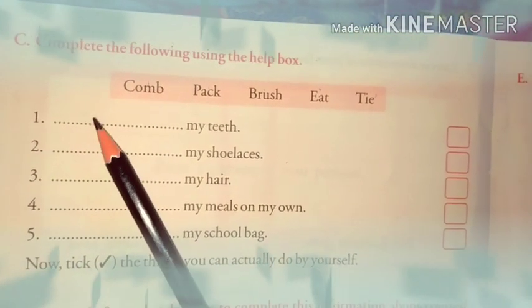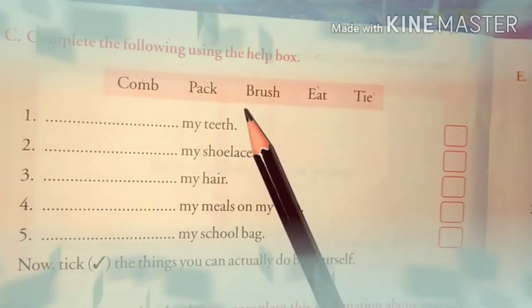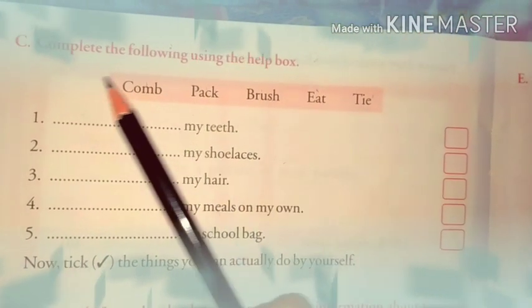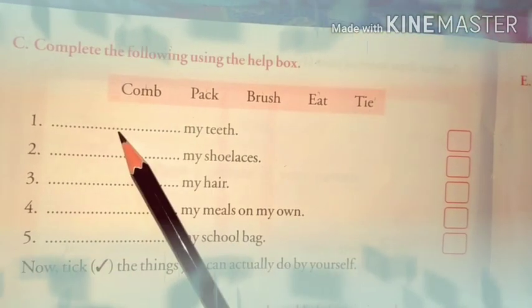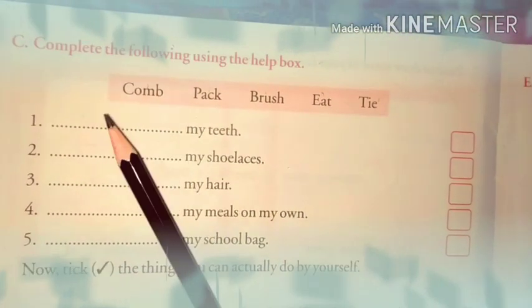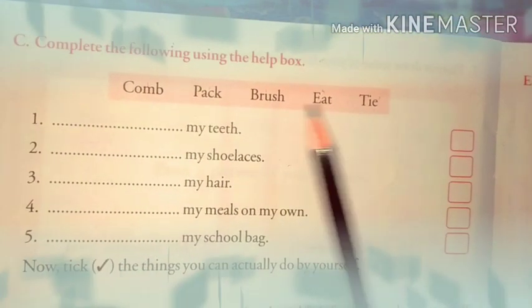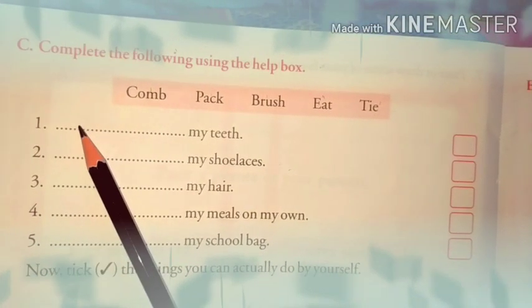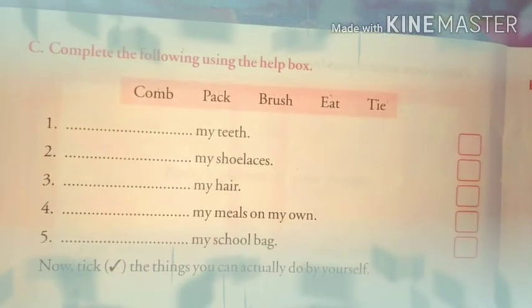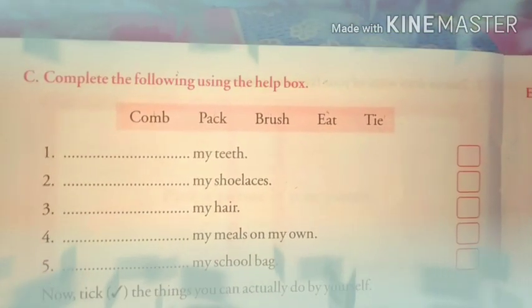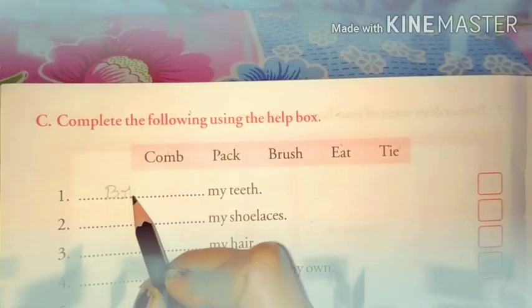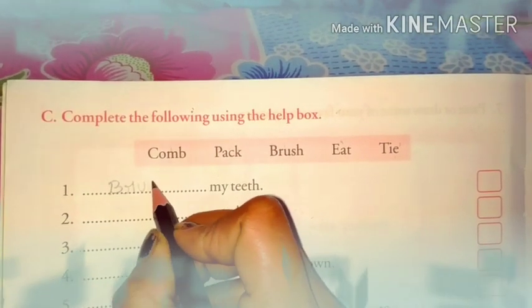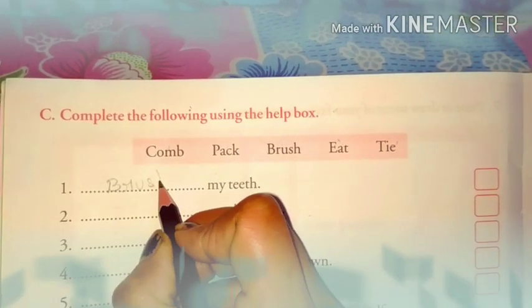Number 1: dash my teeth. Children, let's find the word that will come here from this red box. Yes, brush. So write over here: brush. The spelling of brush is B-R-U-S-H.